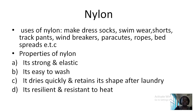Then nylon — nylon is used to make dresses, swimming costumes, track pants, windbreakers, parachutes, ropes, bedspreads and so many others. What are some of the properties? Nylon is also strong and elastic. It's easy to wash. It dries quickly and retains its shape after laundry. It's resilient and resistant to heat. That's why you can wear clothes made out of nylon, because they resist the heat and you can use them over and over again.